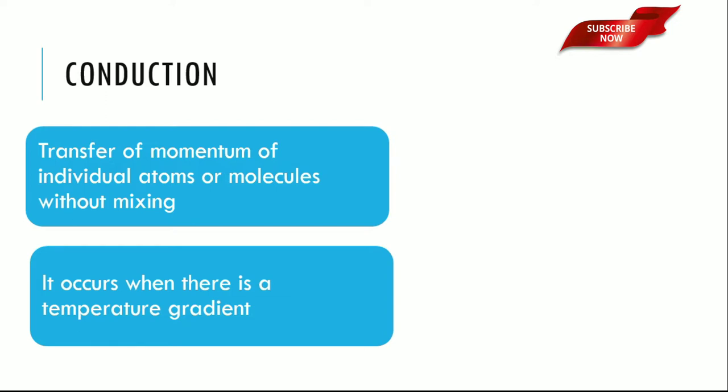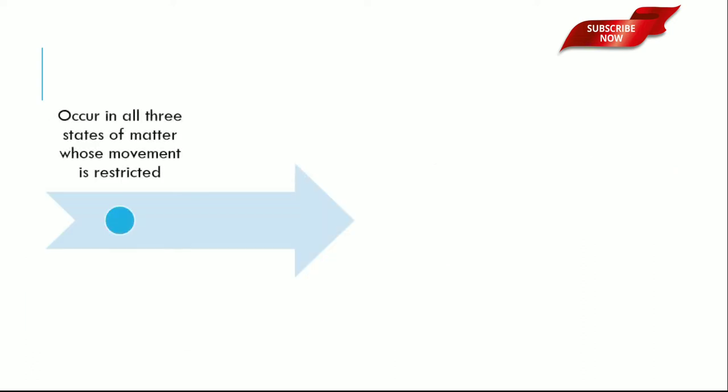For example, when we are heating an iron rod at one end by a heat source, heat transfers from one end to the other end, that is the cold end. So heat flows from the hot surface to the cold surface.